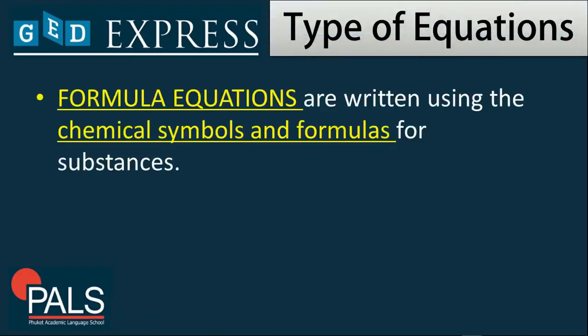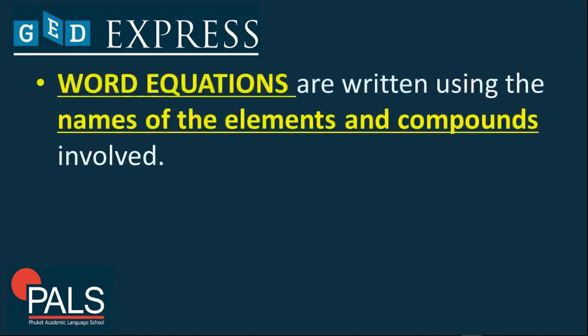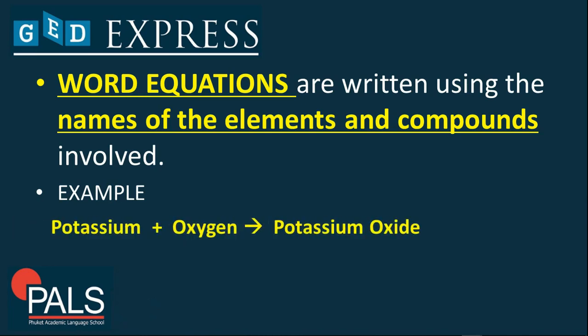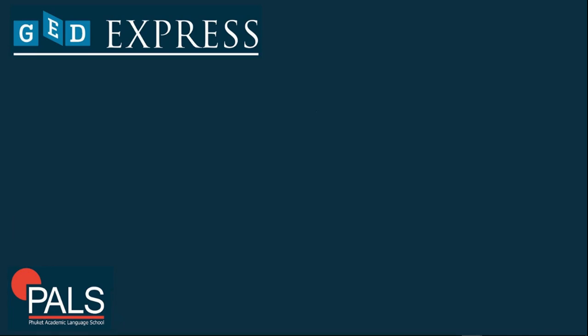The types of equations: we have a formula equation, which is written using the chemical symbols and formulas for a substance. For example, Mg plus S, that's magnesium plus sulfur, will yield magnesium sulfide. And we have word equation, which is written using the names of the elements and compounds involved. Examples are potassium plus oxygen will give you potassium oxide.